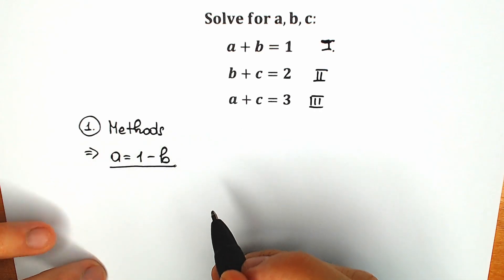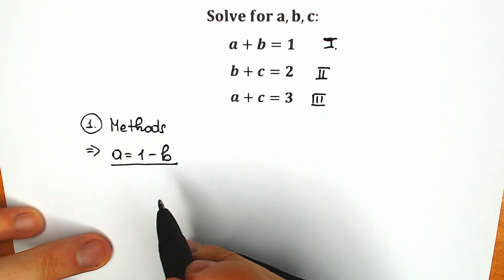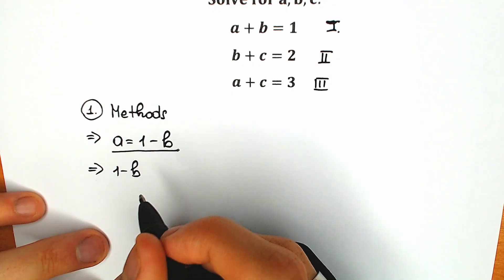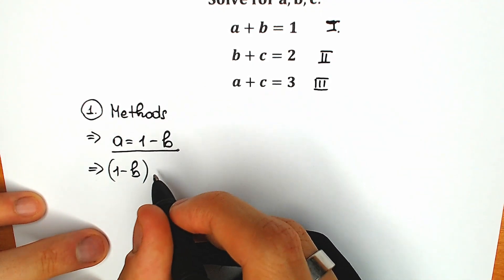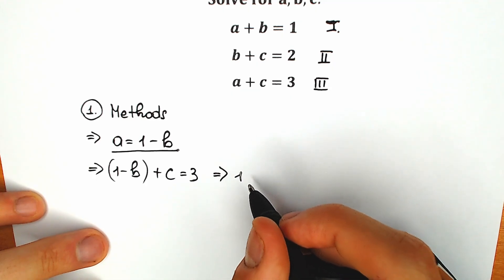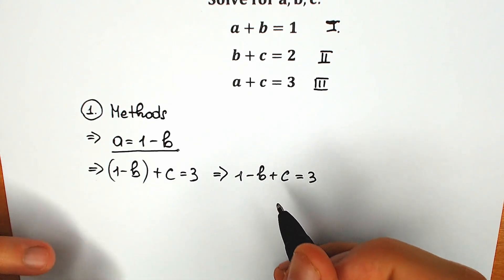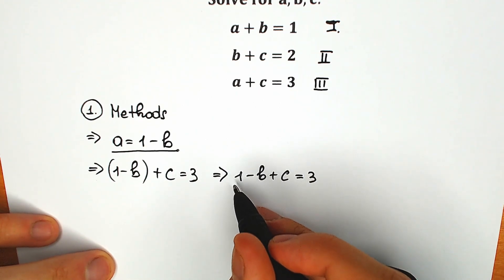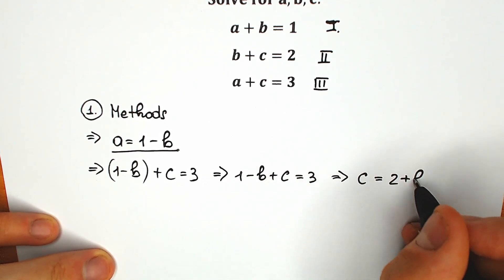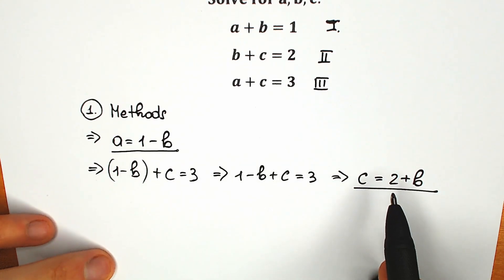Let's call these equations first, second, and third for better understanding. From equation one, let's express a: a is equal to 1 minus b. Now let's plug this a equal to 1 minus b into equation 3. We have a plus c equal to 3, so instead of a we plug in 1 minus b, giving us 1 minus b plus c equal to 3. Subtracting 1 from both sides, we get c equal to 2 plus b.